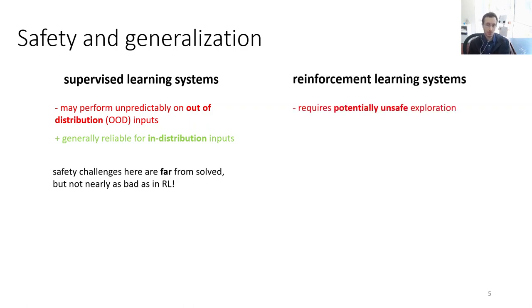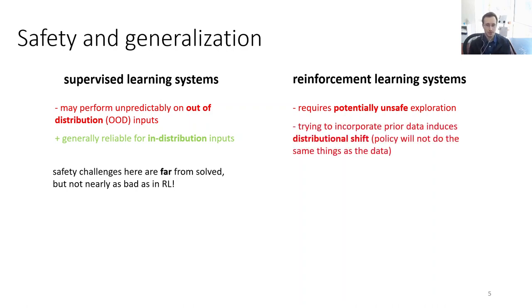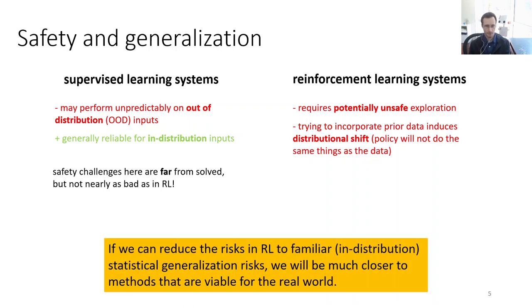With reinforcement learning, the trouble is that we might require potentially unsafe exploration if we start from scratch. And if we try to incorporate prior data, that inevitably induces distributional shift, because if we're doing reinforcement learning, the whole point is to get a policy that is better than what we saw before — and being better means inducing distributional shift. The main idea I'm going to explore is how we can reduce the risks in RL to be more like familiar in-distribution statistical generalization risks, which would bring us much closer to RL methods viable for safety-critical real-world systems.